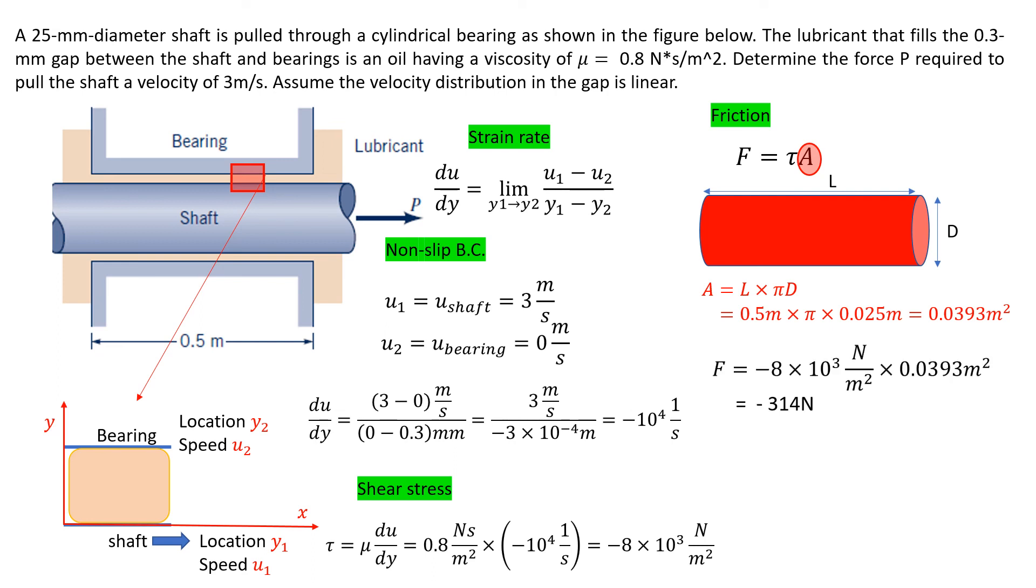Then we can calculate friction: friction equals shear stress times the area. Plugging in the numbers, the friction force is -340 newtons. Negative again indicates the velocity direction.